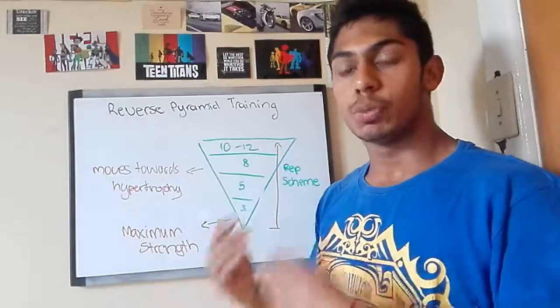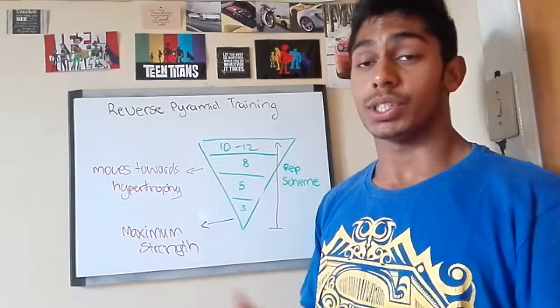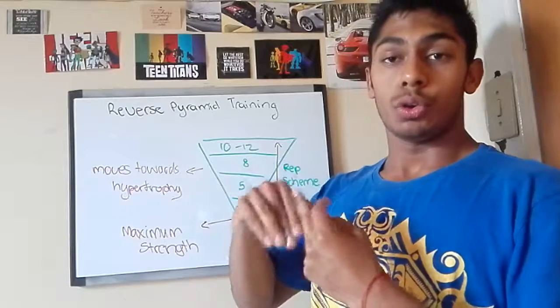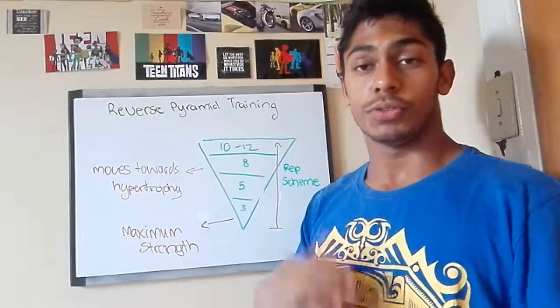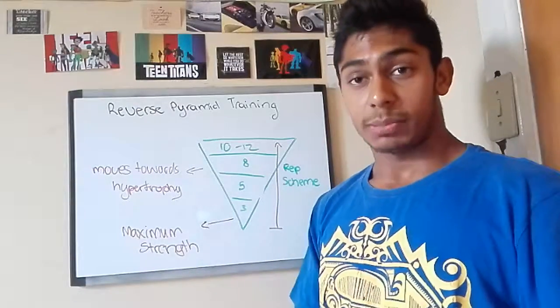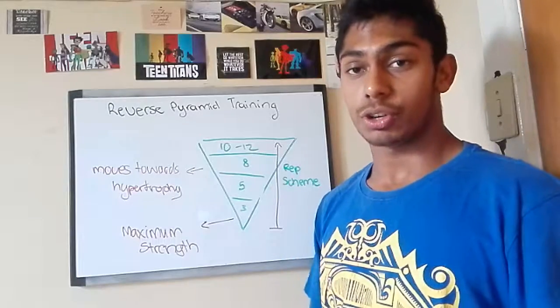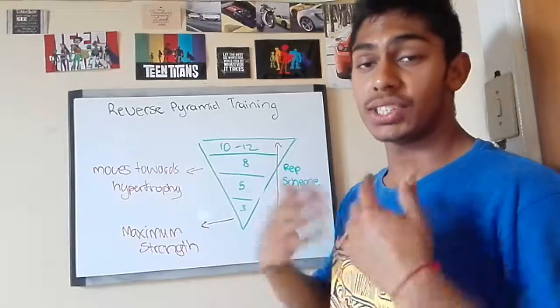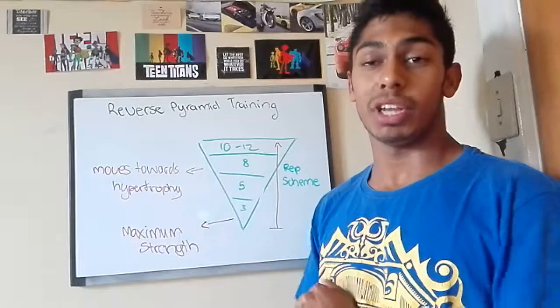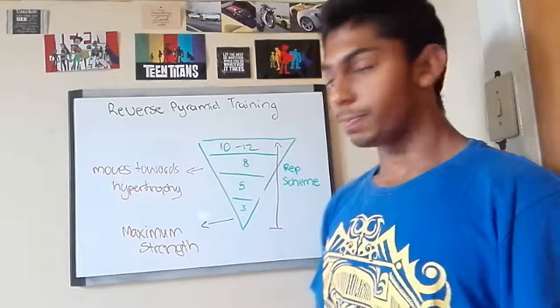The whole point of this is to maximize strength and prioritize it. While pyramid training prioritizes muscle growth and hypertrophy because you want to tax those type 2 muscle fibers and gain as much growth as possible, here we are prioritizing strength gains and getting stronger and being able to move up in weight rather than in size.